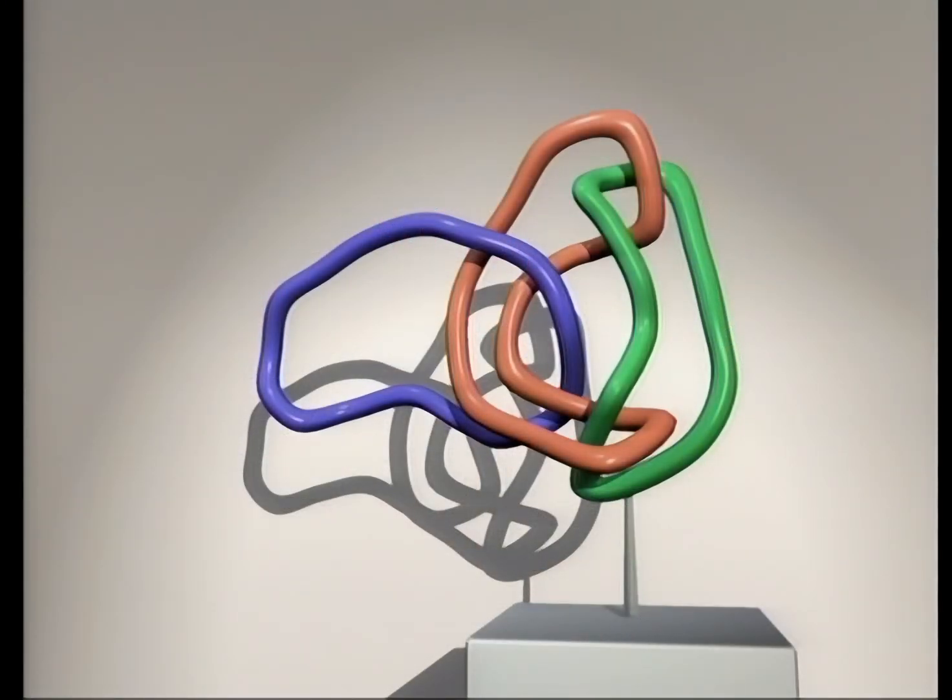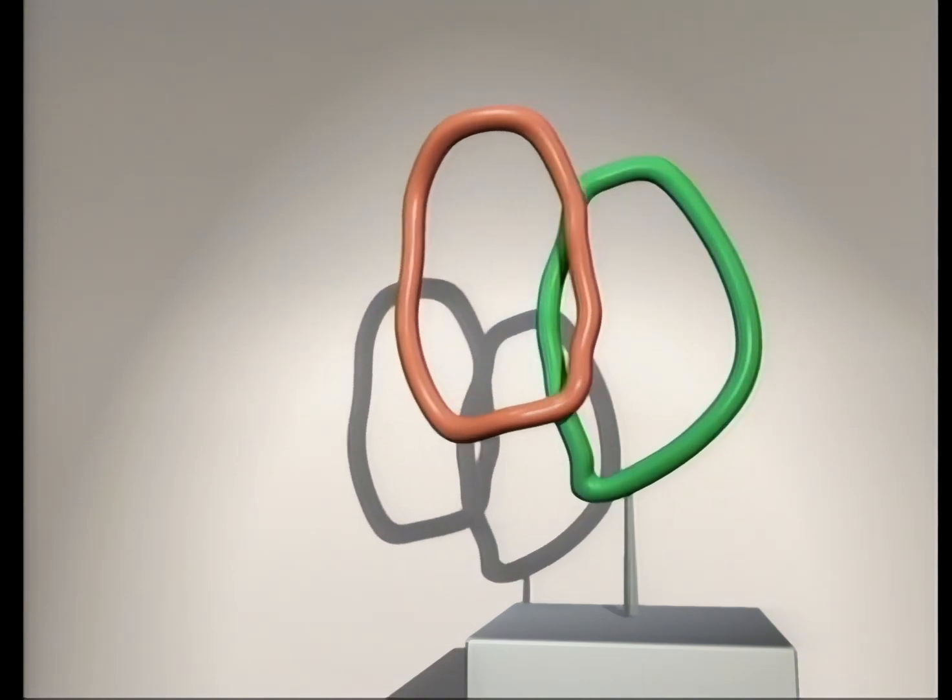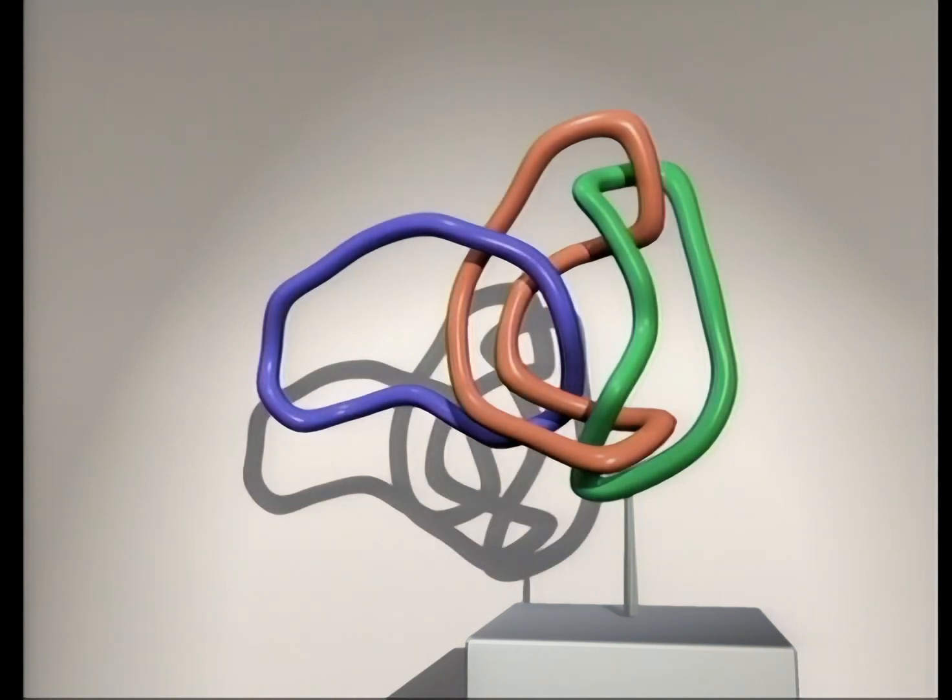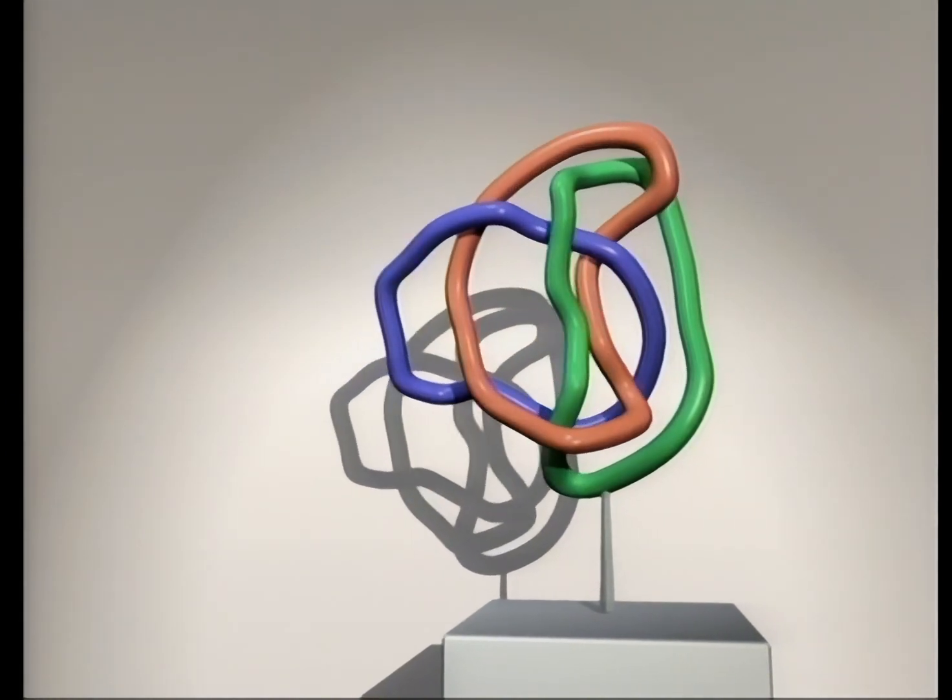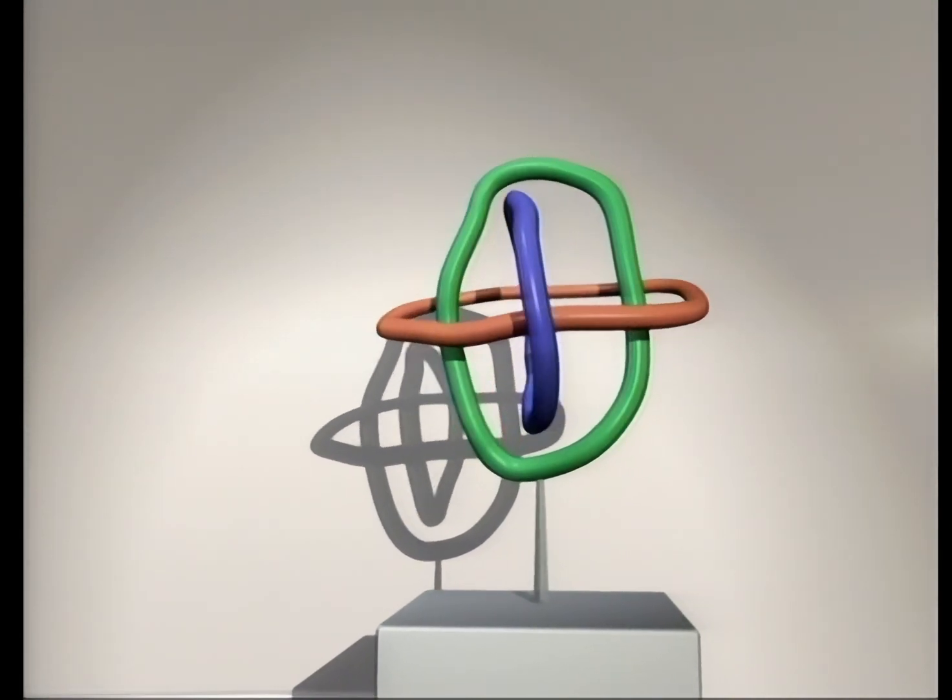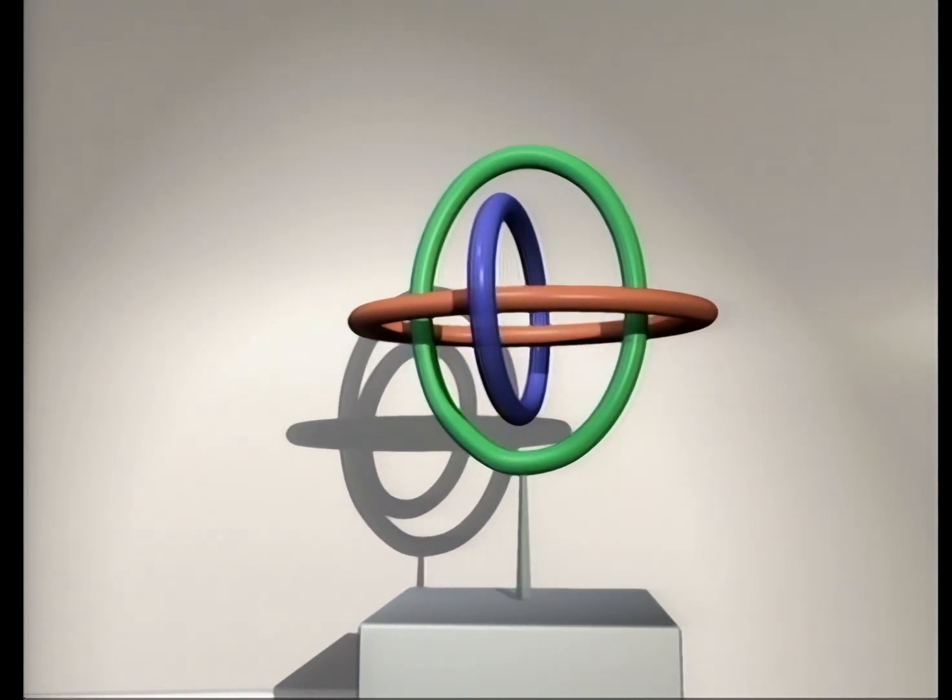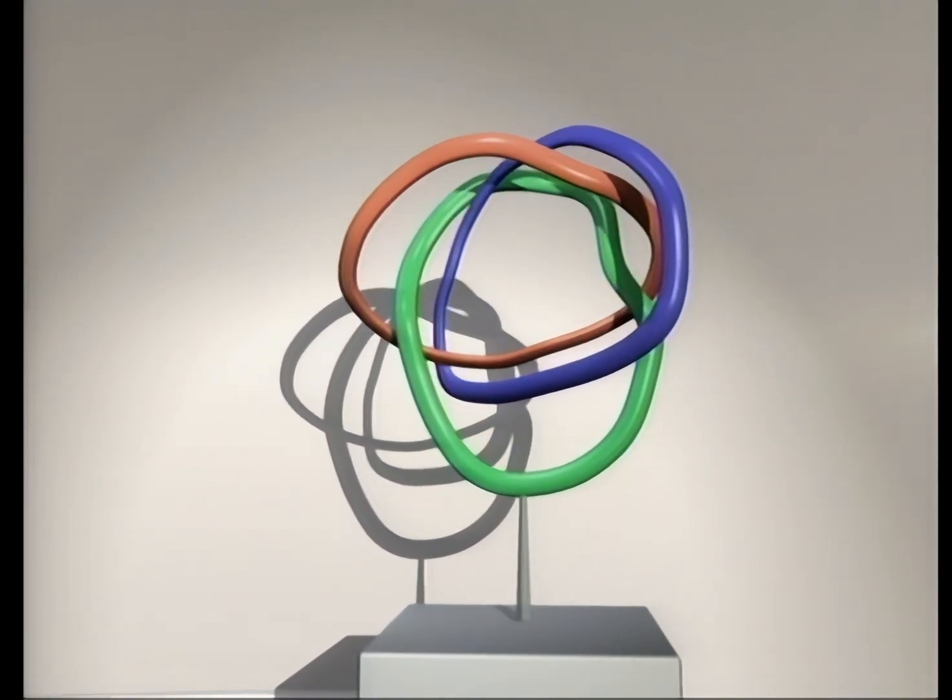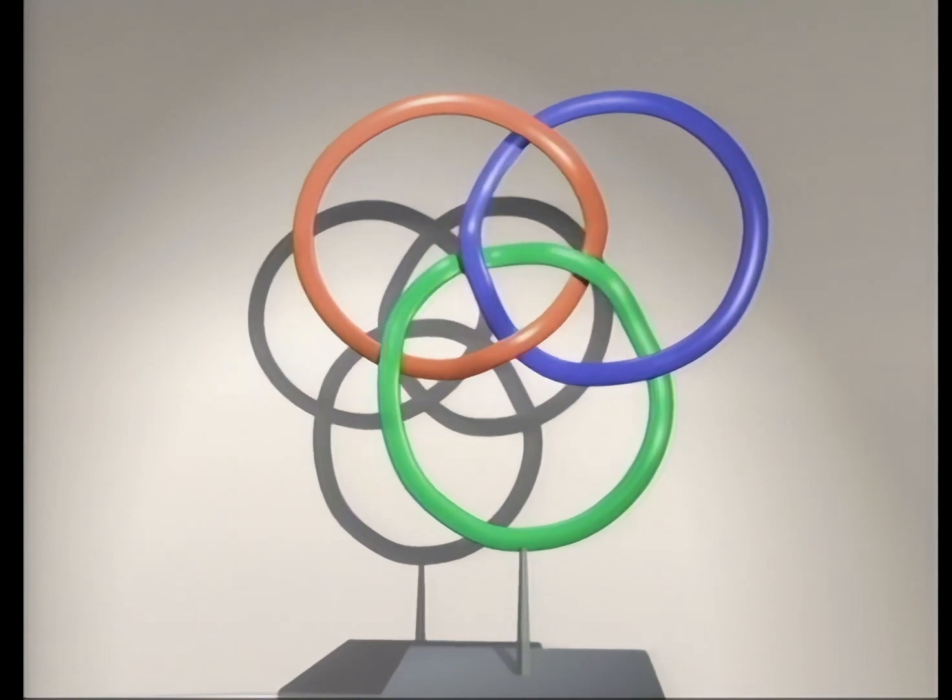Here are three intertwined loops. If you remove any one of them, the other two fall apart. Mathematicians call the union of several loops a link. By rearranging this link we can see that the three loops are equivalent. Here is another symmetric form of the same link. In this form it's called the Borromean rings.